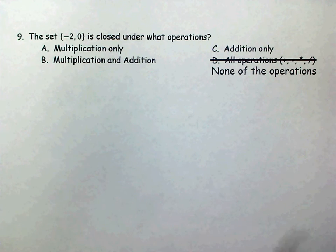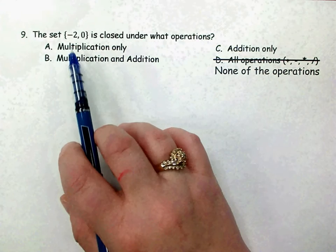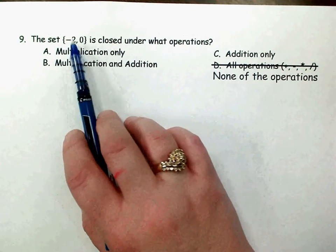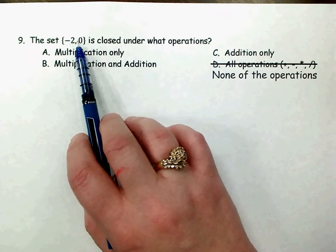So for a set to be closed, it means if you do the operation that's mentioned to just these numbers, then your result is a number that's just one of these numbers.